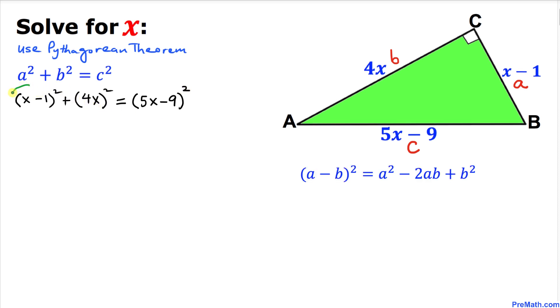Now we are going to expand these two binomials, this one and on the right hand side this one, by using the a minus b square formula. Let's expand it. That's going to give us x squared minus 2x plus 1.